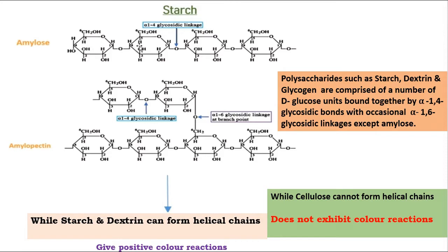Glycogen is bonded to another glucose molecule by a glycosidic bond. They are bonded at carbon number one of one molecule and carbon number four of another glucose molecule. If you cannot understand alpha-beta forms, epimerism, or endomerism, you can watch the lecture on isomerism.